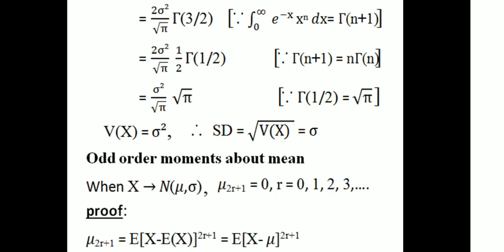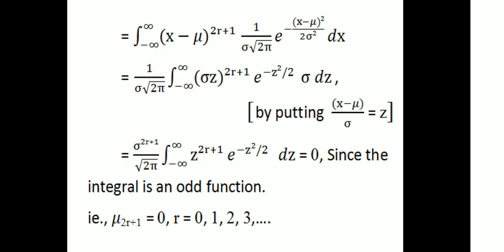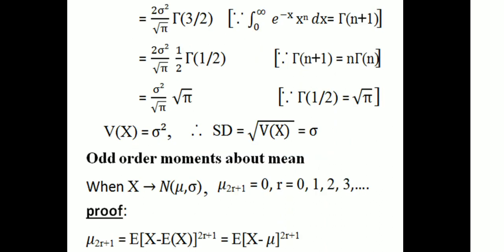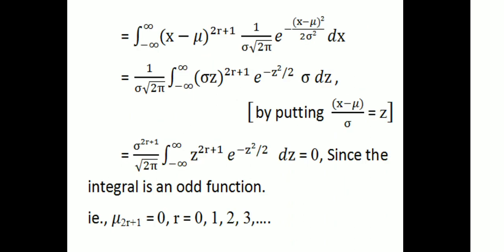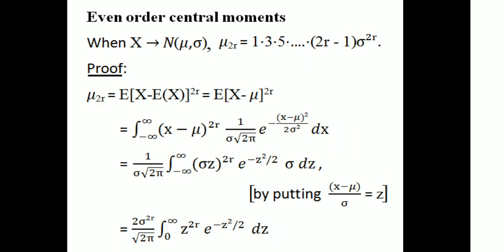Therefore the expectation of (X minus E[X]) raised to 2r+1, that is μ₂ᵣ₊₁, equals 0, for r equal to 0, 1, 2, 3, etc. This proves that the odd-order central moments of the normal distribution are zero. When X follows normal distribution with parameters μ and σ, μ₂ᵣ₊₁ equals 0.